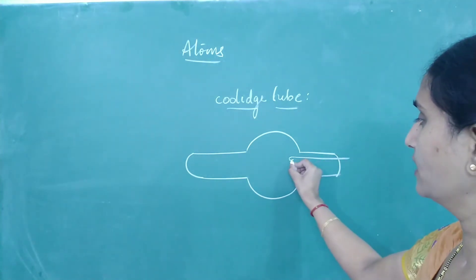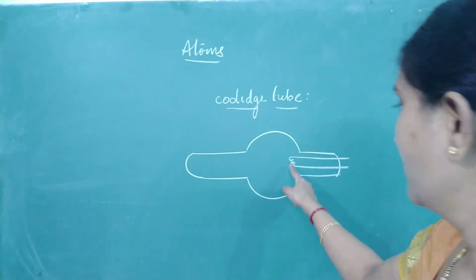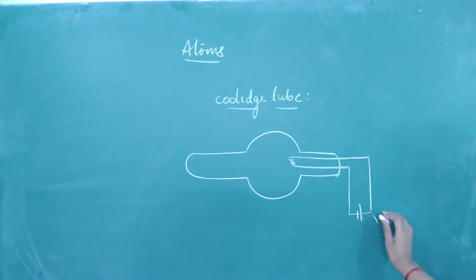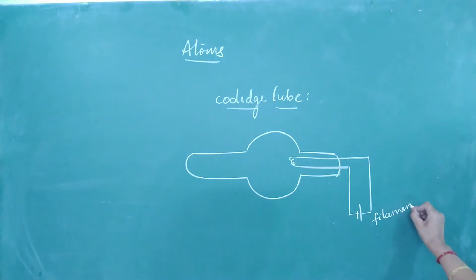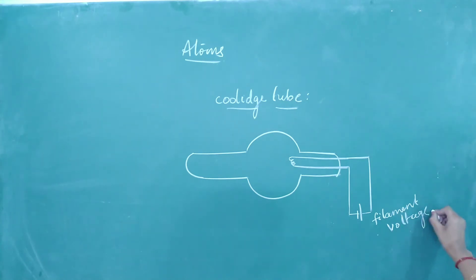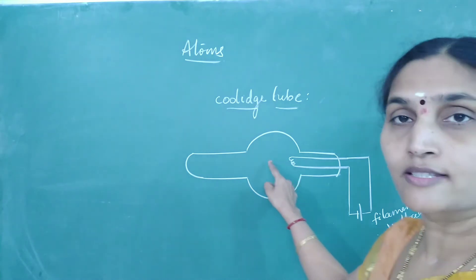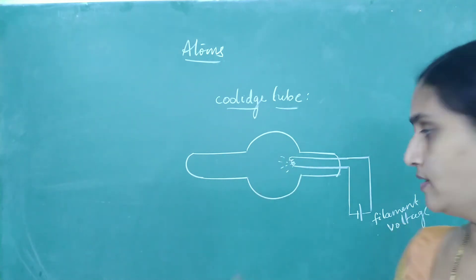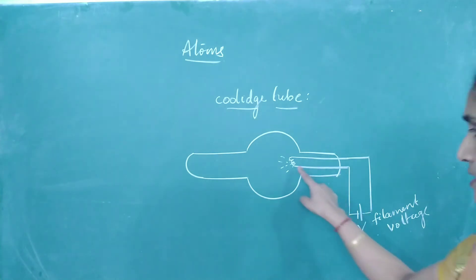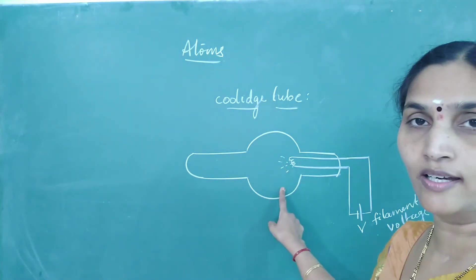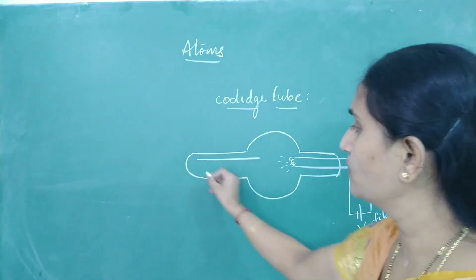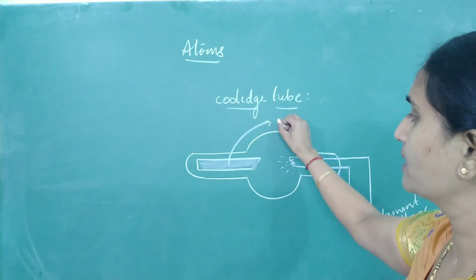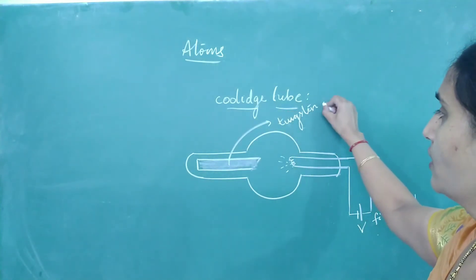One end of the Coolidge tube is connected to an electron gun, just like the Davisson–Germer experiment. This electron gun is connected to a battery of low potential — the filament voltage. When connected to a battery through a key, the filament gets heated and liberates electrons. By increasing the filament voltage, you can increase the number of electrons coming out. These electrons are then accelerated towards the target, which is a heavy metal such as tungsten or molybdenum.